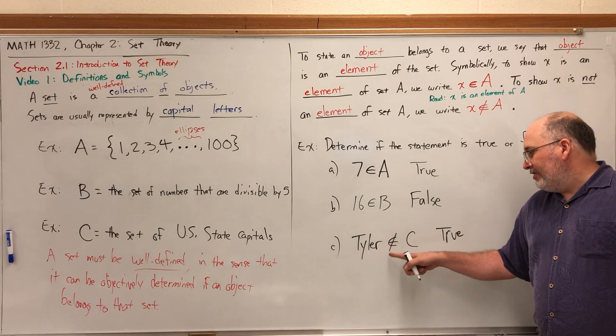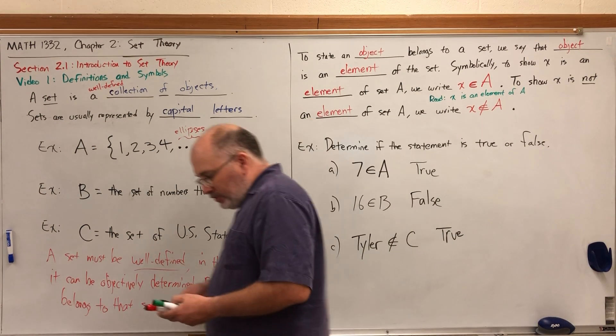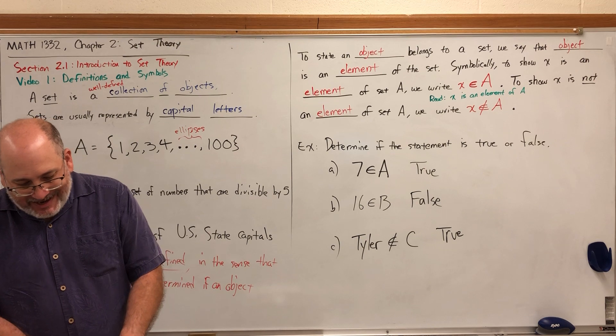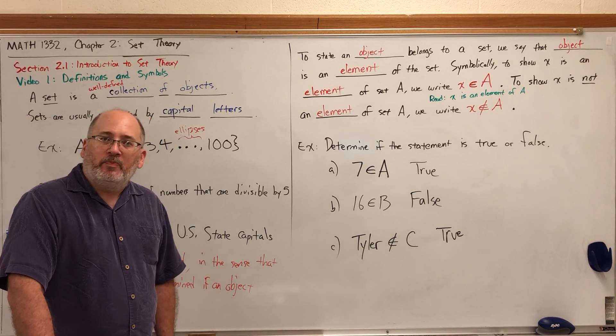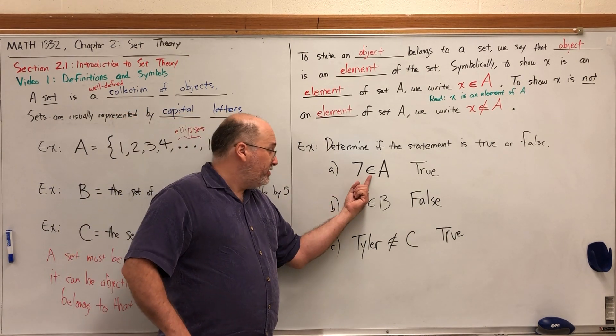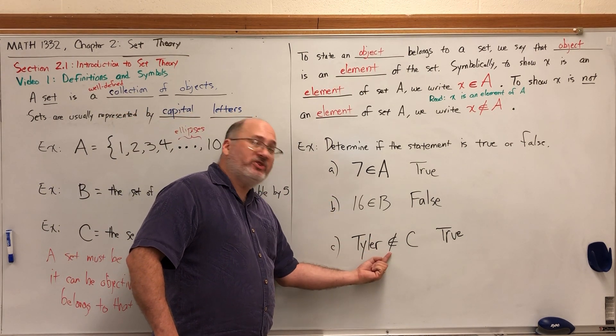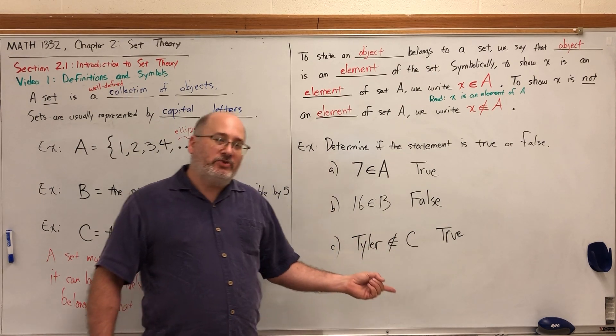Had it said Tyler is an element of C, then it would have been false. So when you're determining if an object is an element of a set, the concept is real simple: is the object in the set or not? This symbol says it is, this symbol says it is not. But don't just assume that if somebody writes a statement down that it is true or false.